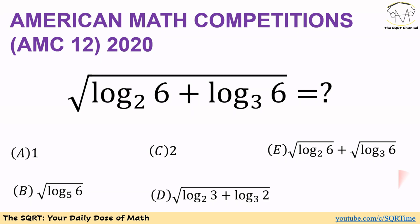This is a multiple choice problem. For case A we have 1. For B we have radical log of 6 in base 5. For C we have 2. For D we have radical log of 3 in base 2 plus log of 2 in base 3.